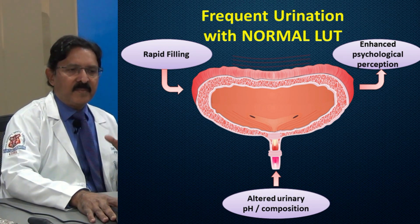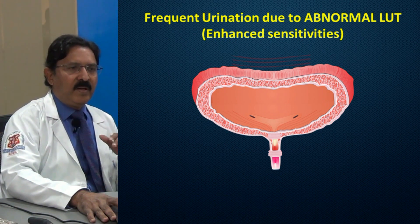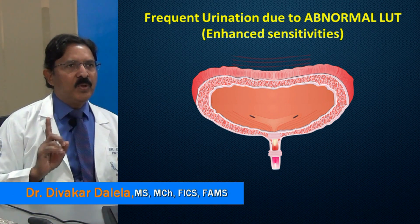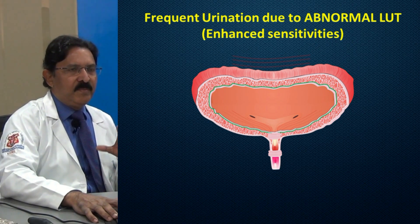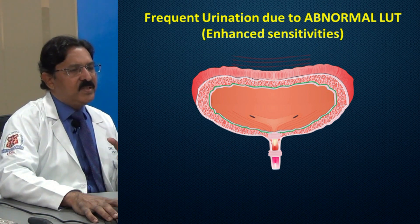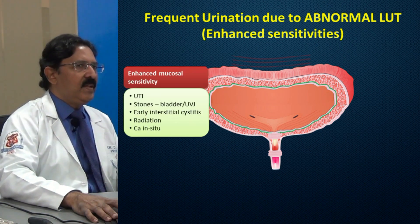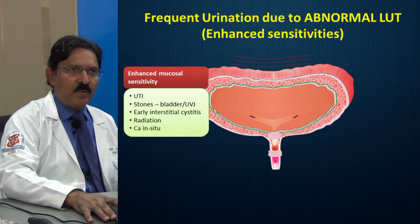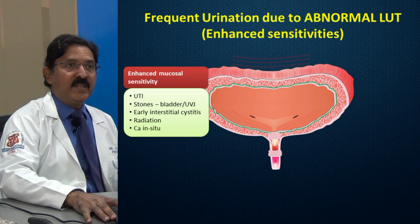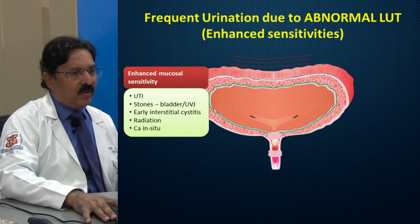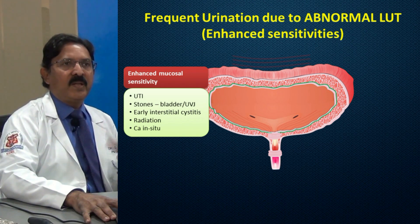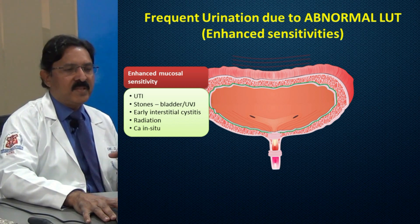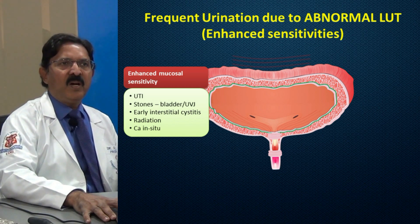When the lower urinary tract is abnormal, there are two groups of abnormality. The first is enhanced sensitivity of the urinary tract — specifically enhanced mucosal sensitivity. This is seen in patients of urinary tract infection where mucosa gets inflamed, stones in the bladder or at the ureterovesical junction causing mucosal edema, cases of early interstitial cystitis, radiation changes on the bladder, and importantly, early carcinoma in situ, which can also present as increased frequency due to enhanced mucosal sensitivity.